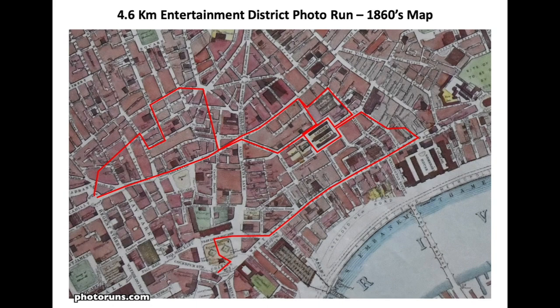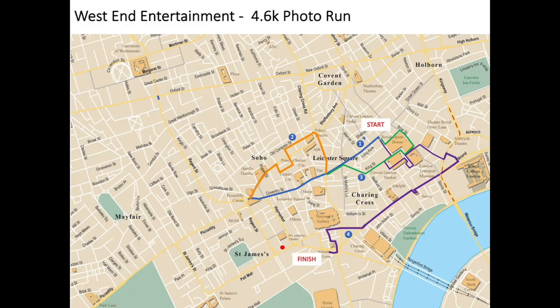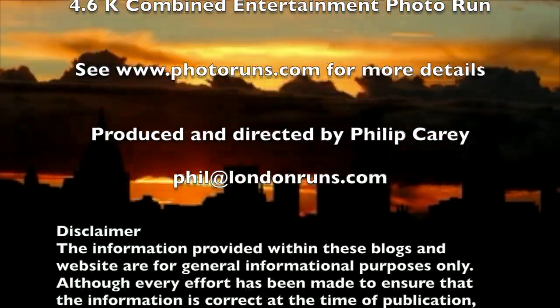That will give you a good overview of most of the entertainment areas in London. I do another route which actually goes from Covent Garden all the way up to Tottenham Court Road through St. Giles, but I haven't included it on this set of runs. That is also an entertainment area, but it has a slightly different history to the other areas we've been talking about here. And that ends this section.